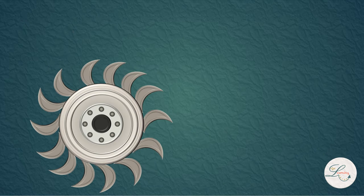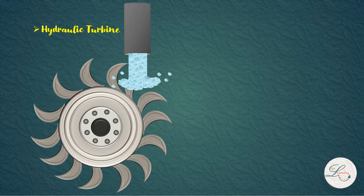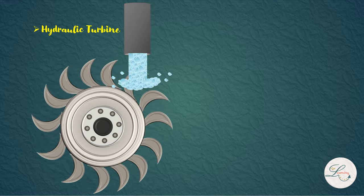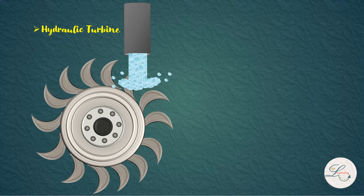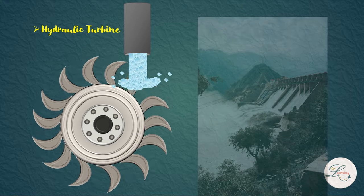The turbine which uses flowing water as the input is called hydraulic turbine. This kind of turbine is used in hydroelectric power plants. Most hydroelectric power plants use water from dams.